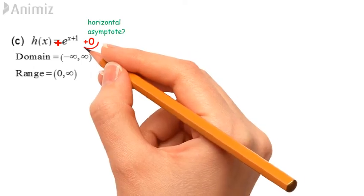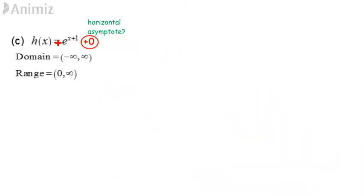What's the horizontal asymptote? You are right. The horizontal asymptote is y equals 0.